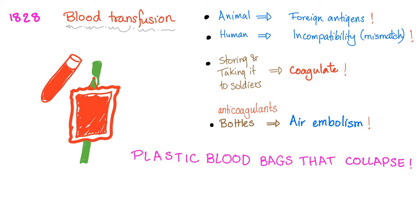In 1828, blood transfusion became possible. First we tried transfusing blood from animals, but patients would die because animals have foreign antigens. Then we tried blood transfusion from other people — again patients would die from incompatibility, because we hadn't discovered the ABO system yet. Then we discovered the ABO system and stored blood in bottles, but the blood would coagulate. We added anticoagulant to the bottles, but patients still died from air embolism because after the blood there was air. So now we use plastic blood bags that collapse.